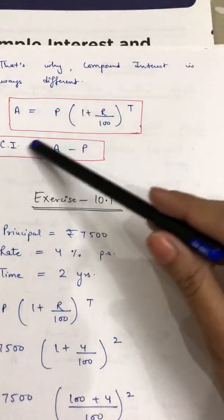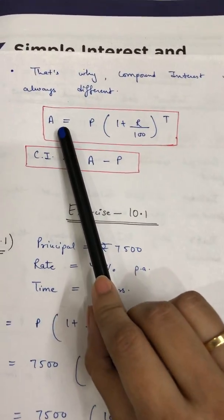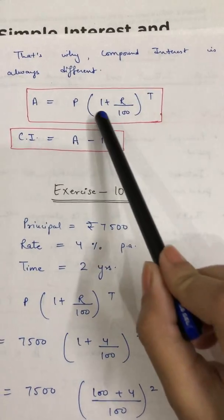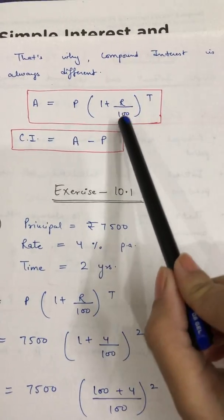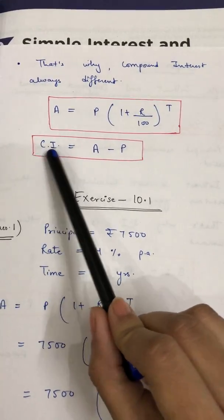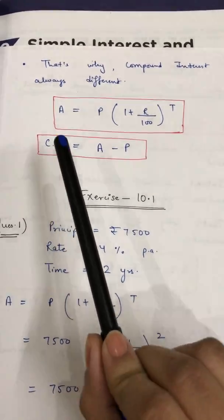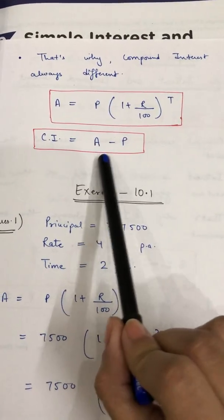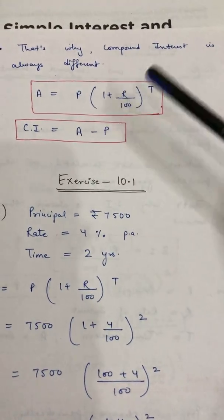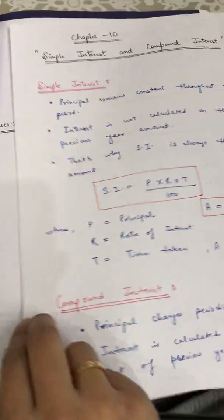The formula for compound interest: first we find the amount, which is A = P × (1 + R/100) raised to the power T. After finding the amount, the compound interest is equal to Amount minus Principal. So there are two formulas for compound interest and two formulas for simple interest.